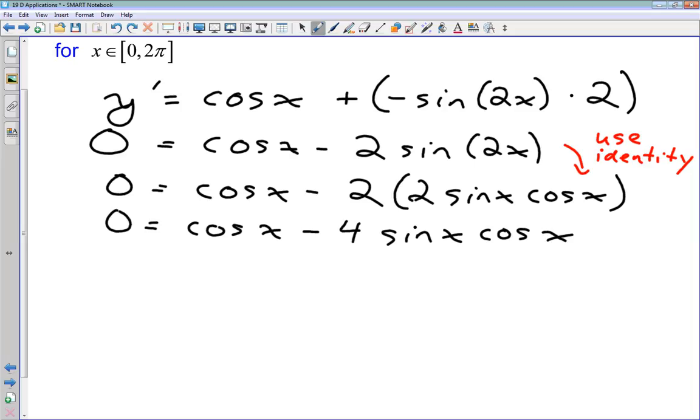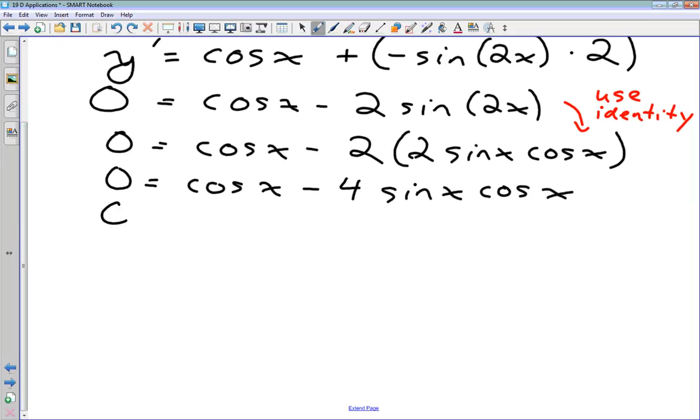So I have zero equals cos x minus four sine x cos x. How do we solve this? The same way we have always solved these questions where we're setting it equal to zero. We want to factor that right hand side. So what is common to these two terms? Well, we've got a cos x that is common. So let's factor out the cos x.